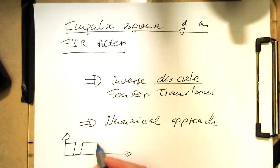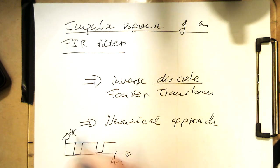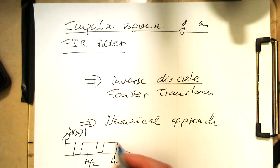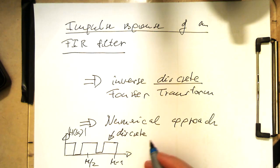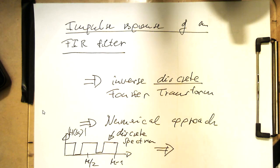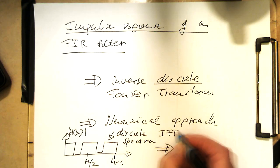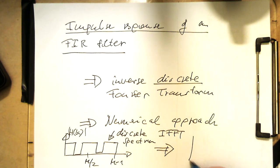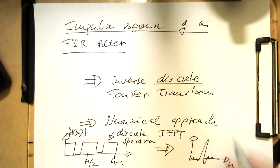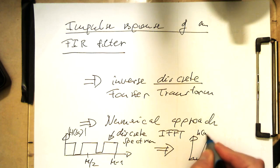Imagine we would like to have a frequency response which looks like this — H(k) — and this is here M-half. If this is just a discrete spectrum, then we just do an IFFT and out there we are getting our impulse response. So the only thing we need to understand is the inverse Fourier transform.